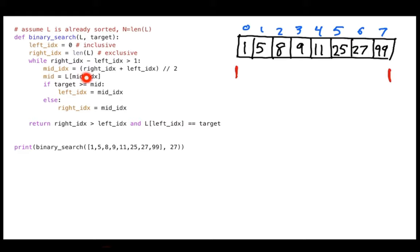Inside the loop I calculate a middle index: (right index + left index) divided by 2, rounded down. With right index 8 and left index 0, that gives me 4. So the middle is at position 4, and I check whether the target is bigger or smaller than the value at that middle position.